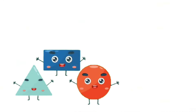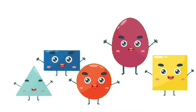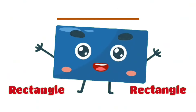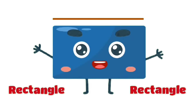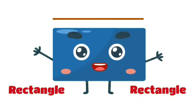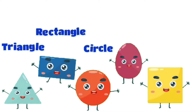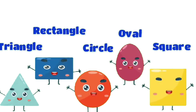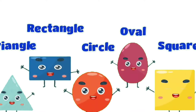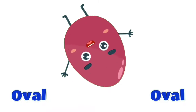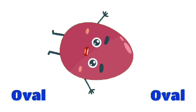Triangle, rectangle, circle, oval, square. Triangle, rectangle, circle, oval, square. I'm a rectangle, you see, like a very long square. I'm a rectangle, you see, like a very long square. A very long square. I'm a rectangle, you see, I'm straight and I'm long like a brick. Triangle, rectangle, circle, oval, square. I'm an oval, round and long, round and long. I'm an oval, round and long, like a circle that's very long indeed.